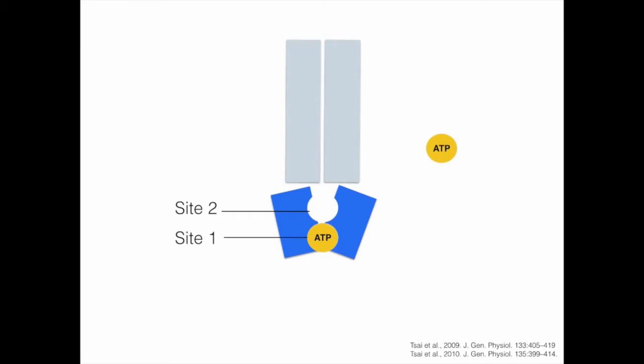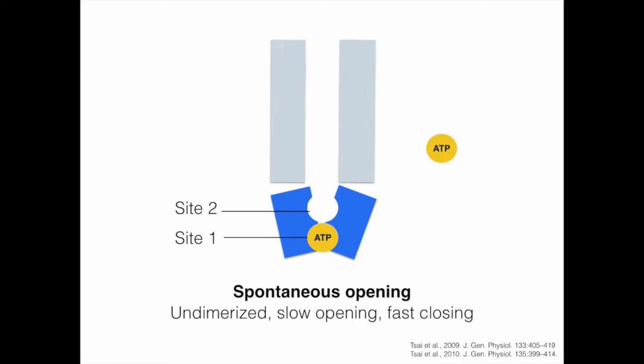Site 2 is also where ATP hydrolysis takes place. Before ATP binds to site 2, the NBDs are not fully dimerized. The gate in CFTR's TMDs opens at an extremely slow rate.